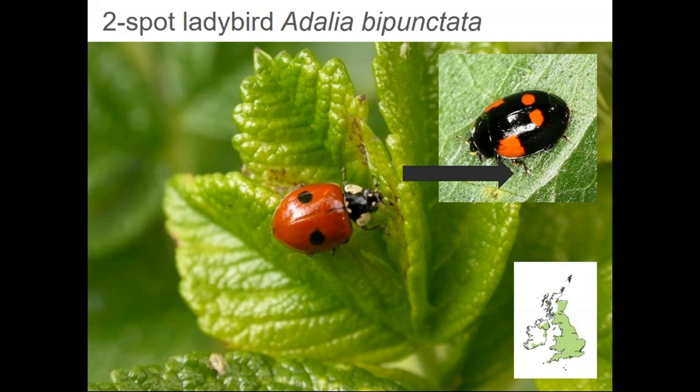Moving to a smaller ladybird — the two-spot, Adalia bipunctata. This used to be a very common and widespread species but we've seen declines in recent decades. It gets a little complicated because it has quite a lot of colour pattern variation. The typical form is red with two spots and white flanking on the pronotum. But it can look very different — a black colour form can have four or even six red splodges, extending right to the edge of the wing cases, with black legs.